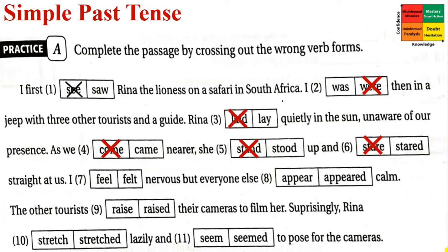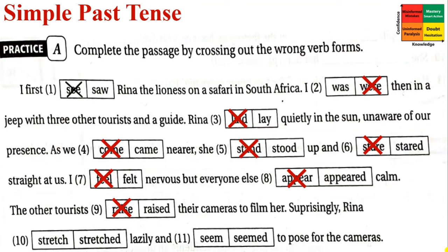Continuing Practice A: 'She stand/stood up' — 'stand' is the base form, 'stood' is the past form, so 'stood' is correct. After 'and,' the verb must also be past form: 'a stare/stared straight at us' — 'stared' is correct. 'I feel/felt nervous' — 'felt' is correct. 'Everyone else appear/appeared calm' — 'appeared' is correct.